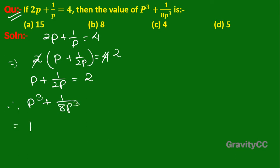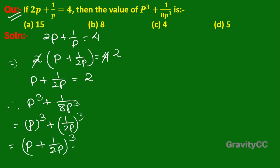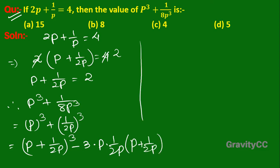We write p³ + 1/(8p³) as (p + 1/(2p))³ minus 3·p·(1/(2p))·(p + 1/(2p)). The value of p + 1/(2p) is 2, so this becomes 2³ minus...